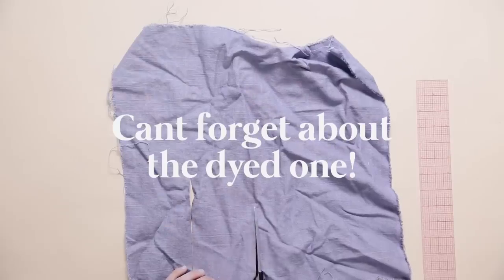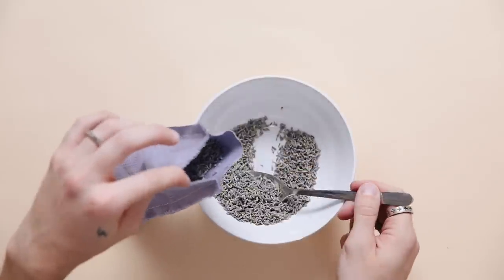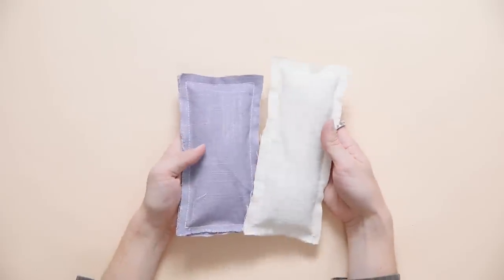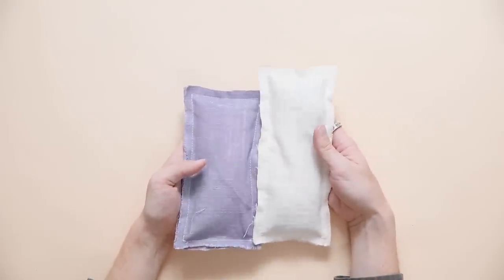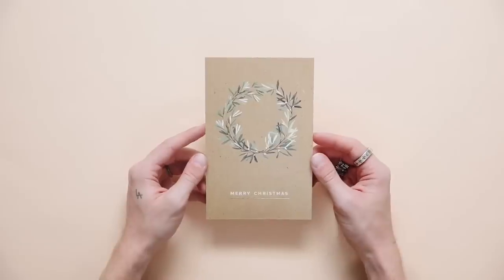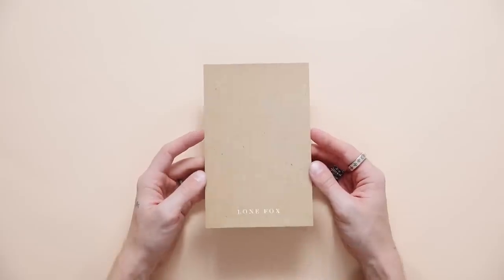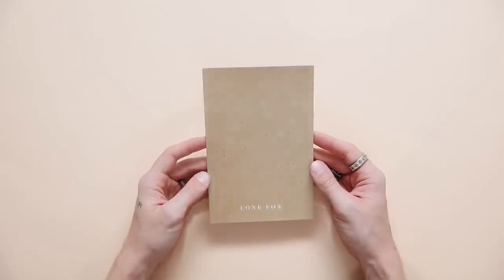But we cannot forget about the dyed one. Look how pretty. It actually turned into like a lavender color, which I thought was perfect. Sewed that shut, and I actually made this one just an inch shorter. And I'm going to be wrapping these up really pretty and pairing them with the really soft and kind of subtle foiled holiday card that has the wreath on it. I think this is so pretty and perfect for the vibe.